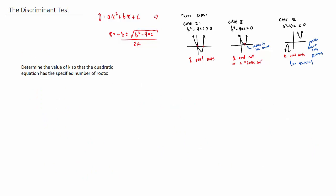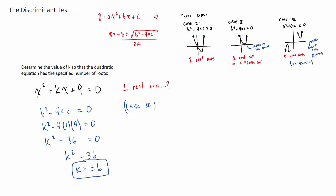All right, the other types of problems they ask you in this section are to figure out the value of some letter. Usually they use k. Let's say in this case that we'll have one real root, so we're looking at case 2. We want to set our discriminant to 0. Basically we have a b value of k, and it turns out that when we solve this thing, k could have been plus or minus 6. So basically if we have k of plus or minus 6, we will end up with one real root.